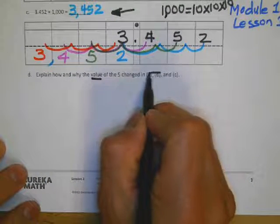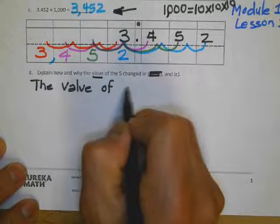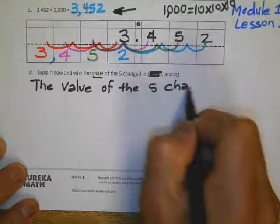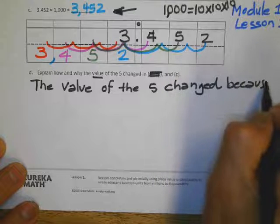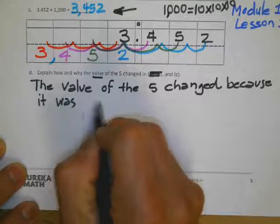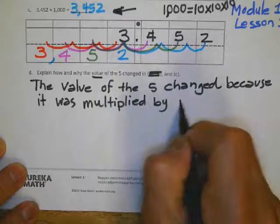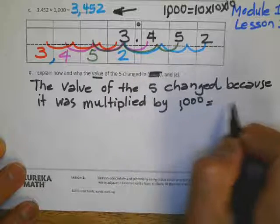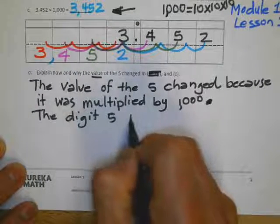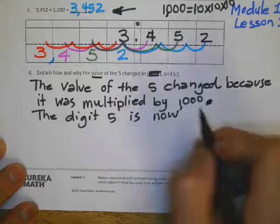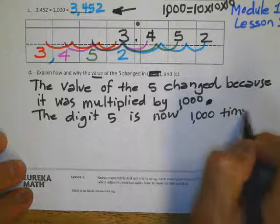five changed in problem C. So the value of the five changed because it was multiplied by one thousand. The digit 5 is now 1,000 times larger.